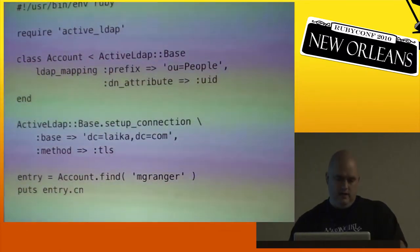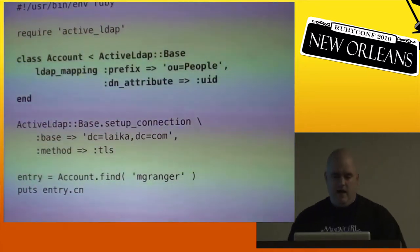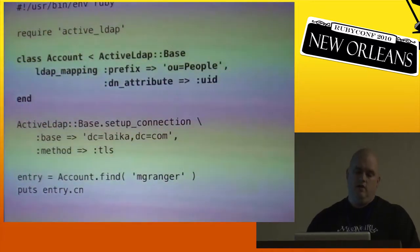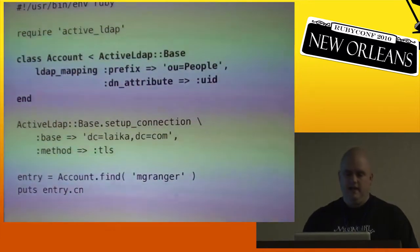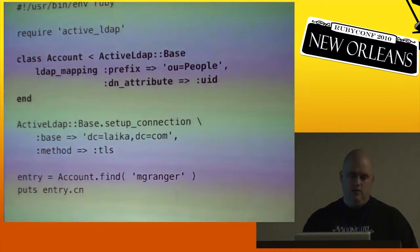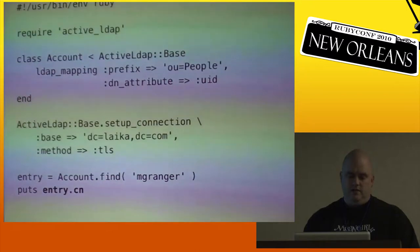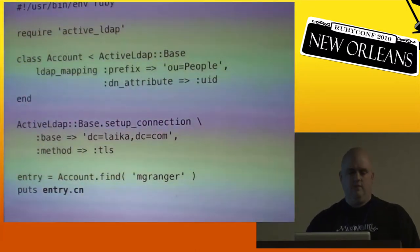Here's what ActiveLDAP looks like doing the same task — it defines an Account class to pull records out instead of using a raw search. It uses the ldap_mapping declaration to set up the prefix that all classes will start their search at, and the DN attribute is the attribute used when you do a find by ID. It provides accessors for attributes just like Active Record — as you can see, it's fetching the CN of the entry.